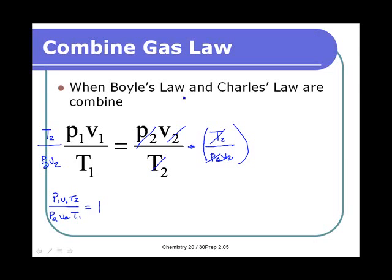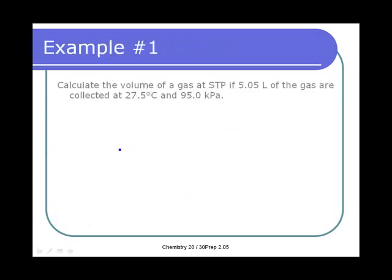This is all equal to one. When everything cancels, anything divided by itself is one. But what this gives us is a version of the formula that's easier to work with. All we've got to remember is that for temperatures, our second temperature is at the top and our first temperature is on the bottom. Otherwise, the one variables are on top and the two variables are on the bottom. Just like with Charles' Law, our temperatures have to be converted into Kelvins.